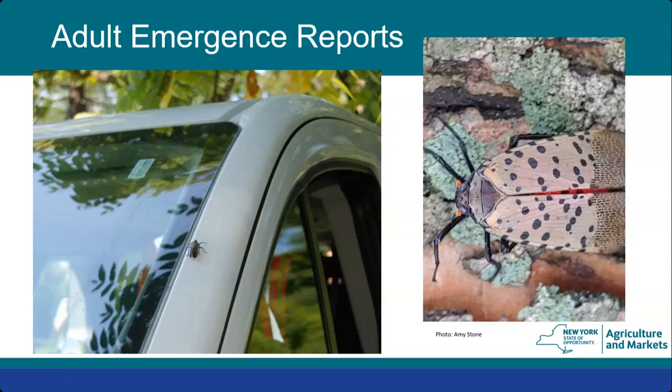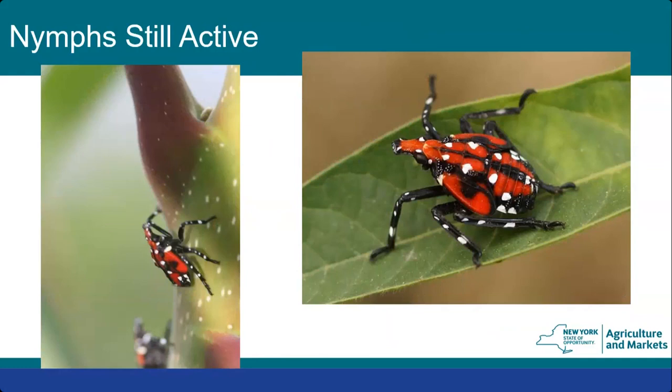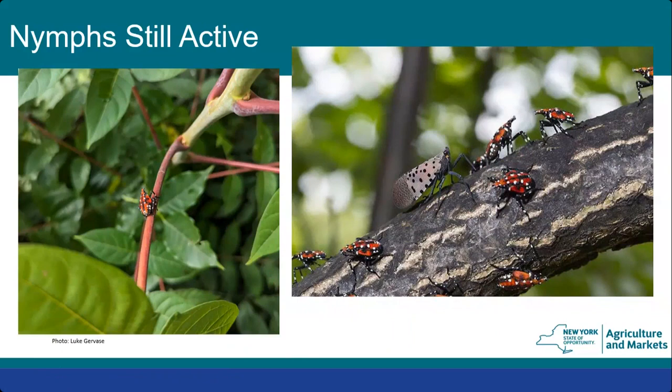Nymphs are still active, particularly the fourth instar nymphs with red wing pads. These are very easy to spot in the environment — they're about the size of a dime and are very colorful, though destructive.